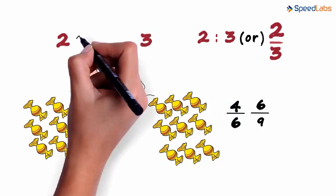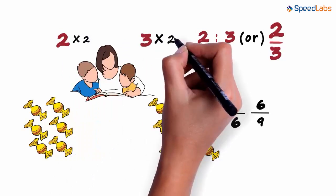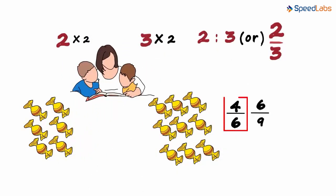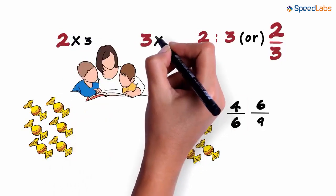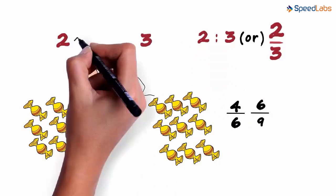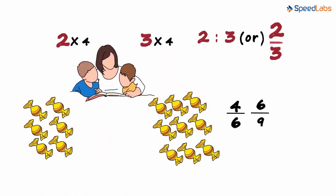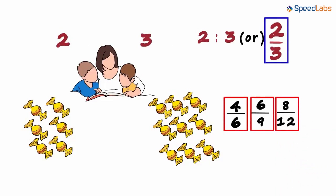If we multiply 2 with 2 and 3 also with 2, we get 4 by 6. If we multiply 2 with 3 and 3 with 3, we will get 6 by 9. And similarly, if you multiply 2 with 4 and 3 with 4, we will get 8 by 12 which is again equivalent to 2 by 3. So all the three ratios are equal to 2 by 3.